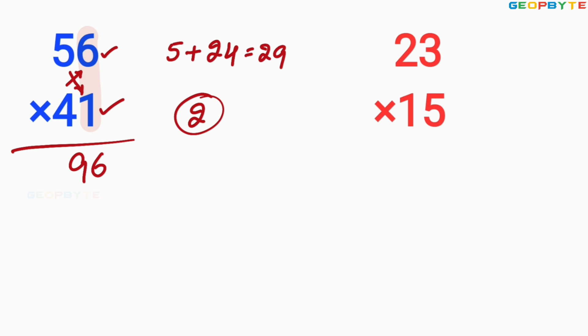Then multiply the tens digits: 5 multiplied by 4 is 20. 20 plus balance 2 is 22. So 2,296 is the value of 56 multiplied by 41.